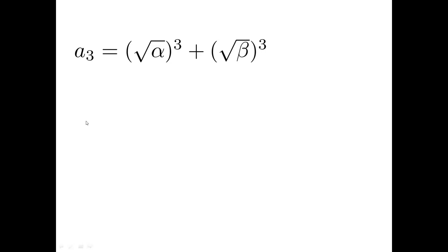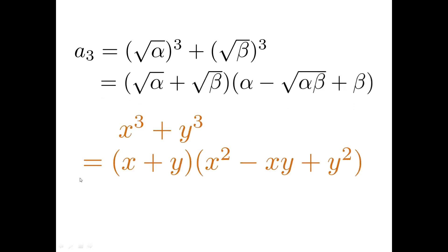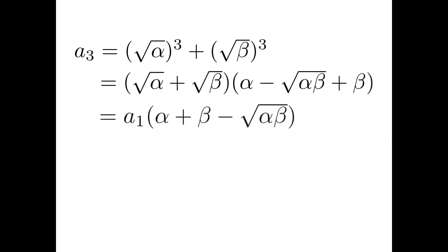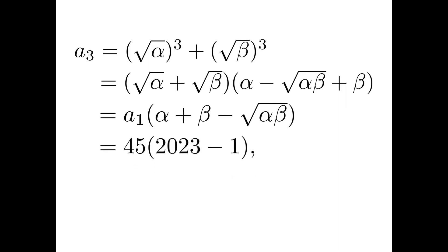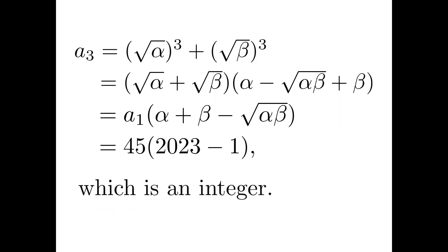Finally, a3 equals the square root of alpha cubed plus the square root of beta cubed. We factor the sum of two cubes using the standard formula. The first factor is the square root of alpha plus the square root of beta, which is a1. Then using alpha plus beta equals 2023 and alpha times beta equals 1, a3 is also an integer, and the job is done.